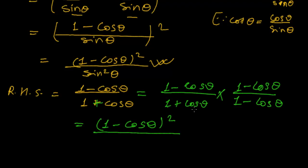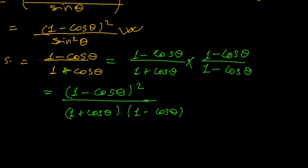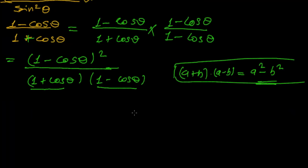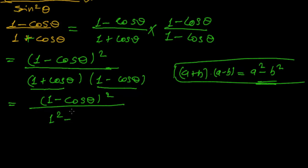The denominator becomes 1 plus cosine theta multiplied by 1 minus cosine theta. Do you feel something here? This is A plus B times A minus B! In earlier classes, we learned that A plus B times A minus B equals A squared minus B squared. So using that identity, the denominator becomes 1 squared minus cosine squared theta.